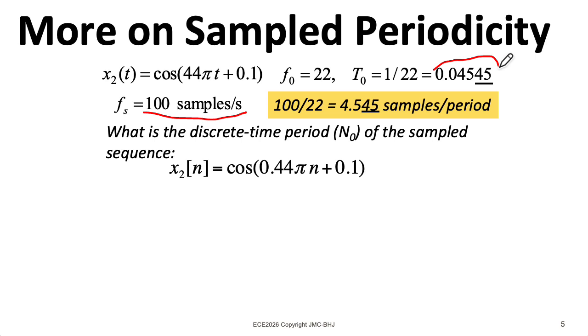We're sampling at 100 samples per second. If an original continuous time period is this 0.0454545, etc., seconds long, and I want to figure out how many samples are in one of those periods, well, if I multiply this 100 by this, I wind up with 4.545, etc. But that's not an integer.